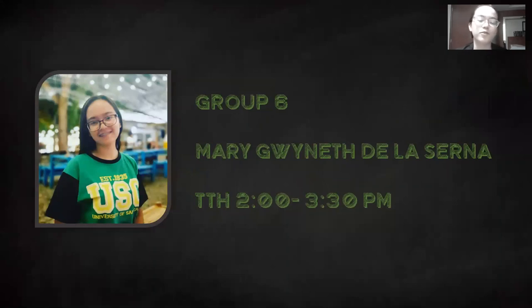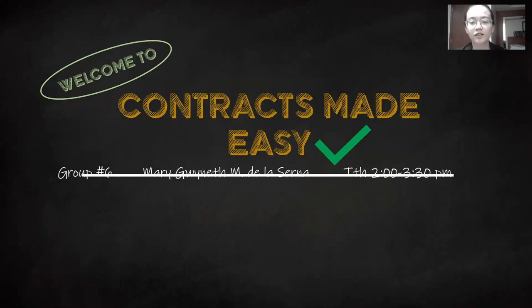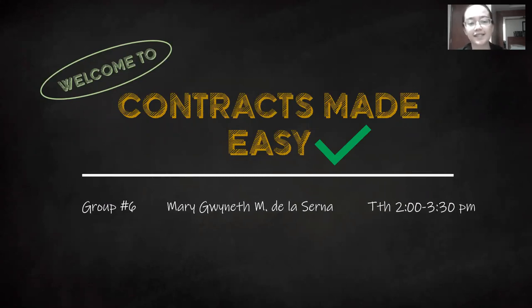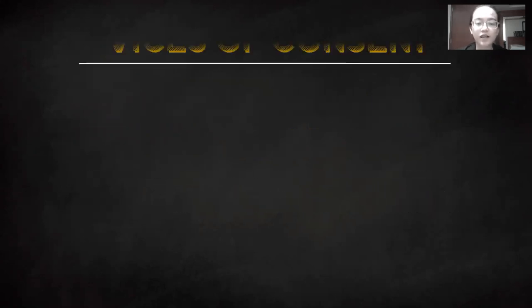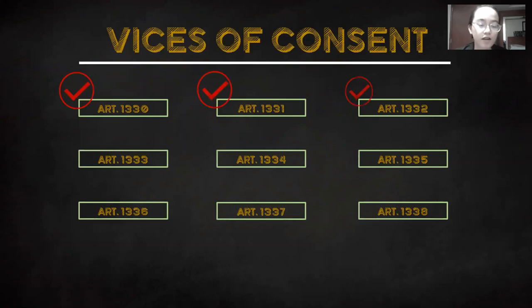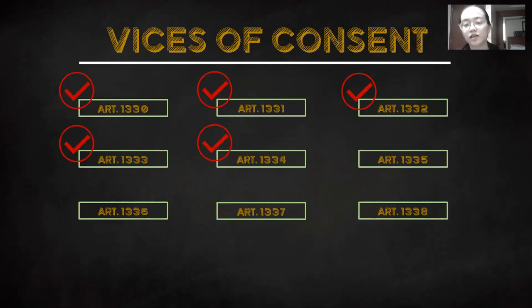What's up, Pips? I am from Group 6, and I am Reconet M. Dallacerna, and I welcome you to Contracts Made Easy. I've already discussed about Article 1330 and Article 1331. So now we are going to discuss Articles 1332 to Articles 1334.